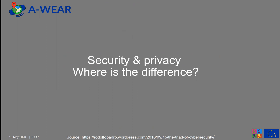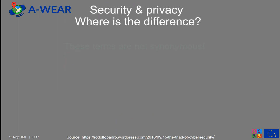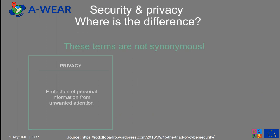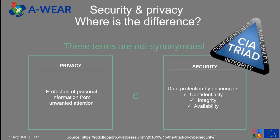But before we go into the details, where is the difference between security and privacy? Sometimes these two terms are mentioned as synonymous, but they are not. Privacy is the protection of personal information from unwanted attention, while security is a more general concept that includes privacy and means data protection by ensuring its confidentiality, integrity, and availability — or the CIA triad.